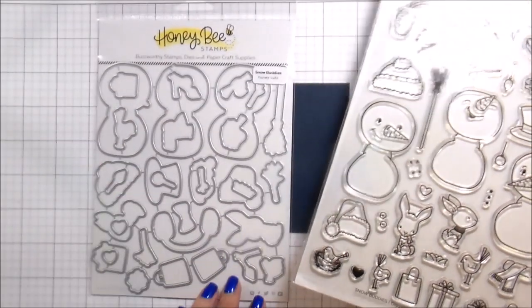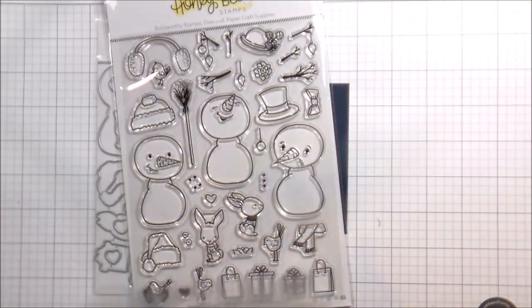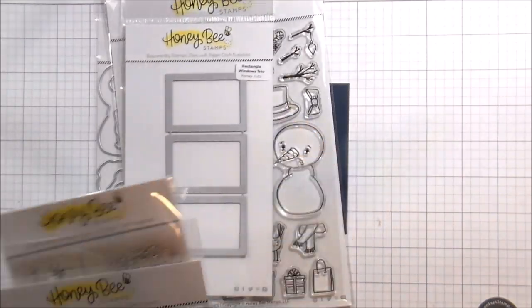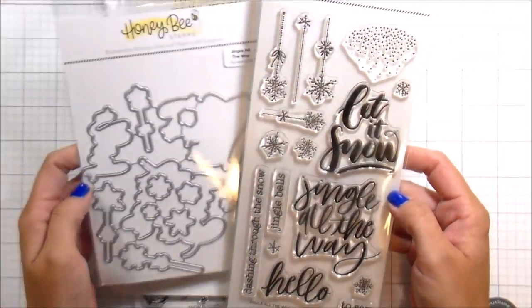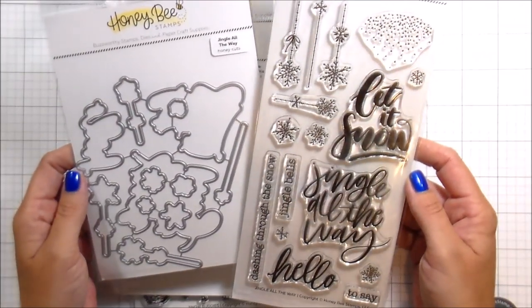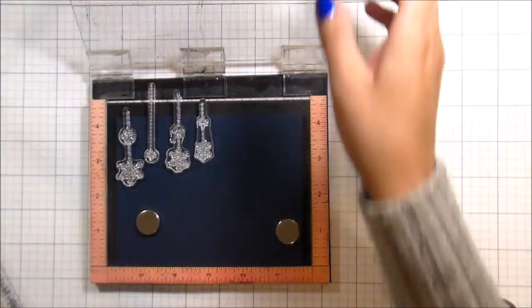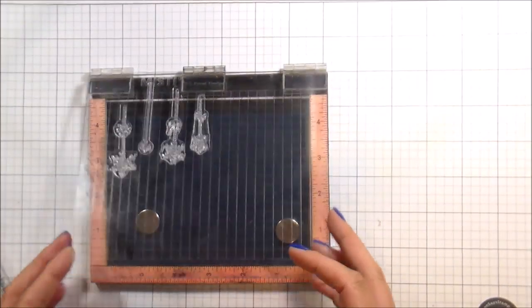So I'm using the Snow Buddy stamp set and the matching dies. And then I'm also going to use the Rectangle Trio die and Jingle All the Way. It's the stamp set and the dies as well.